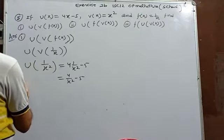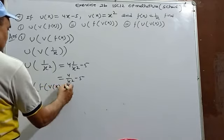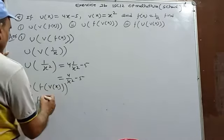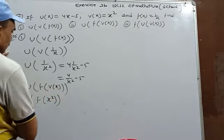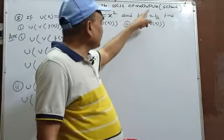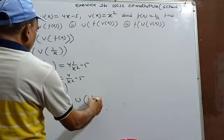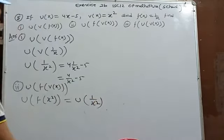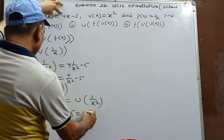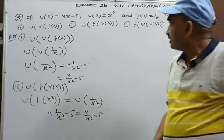u(f(v(x))): v(x)=x², then f(x²)=1/x², then u(1/x²)=4(1/x²)-5=4/x²-5.